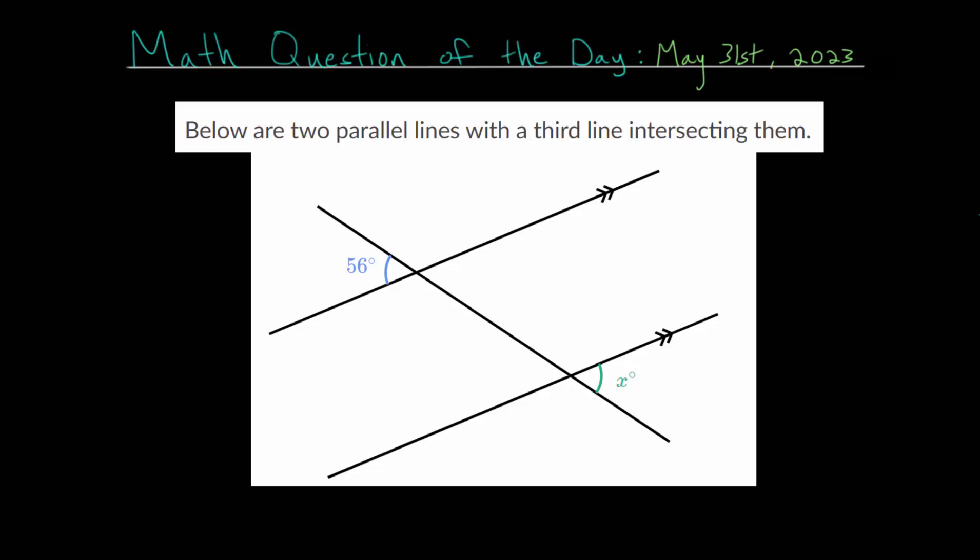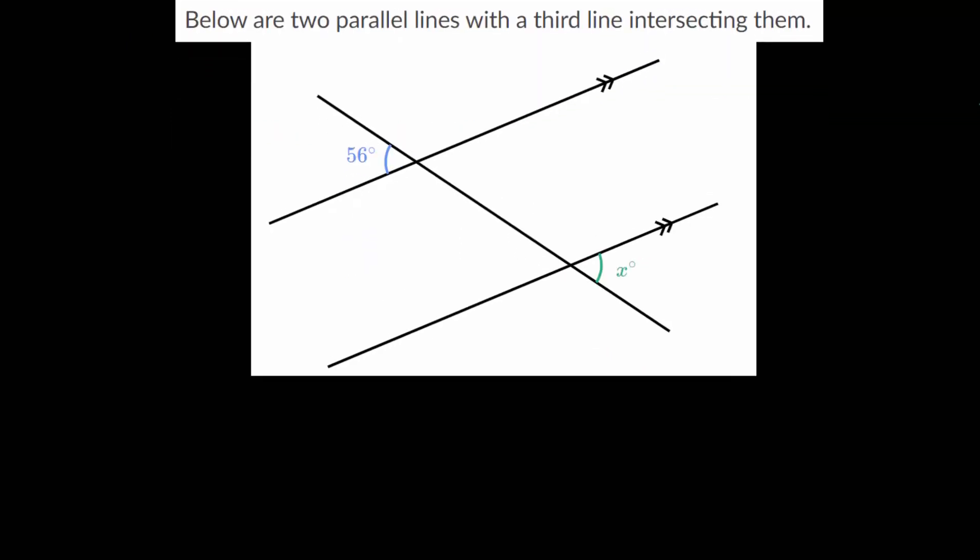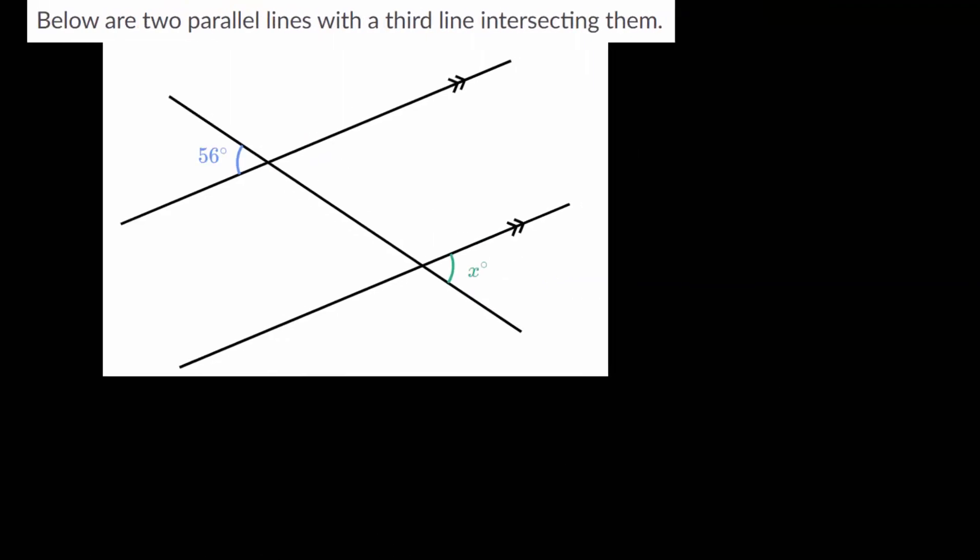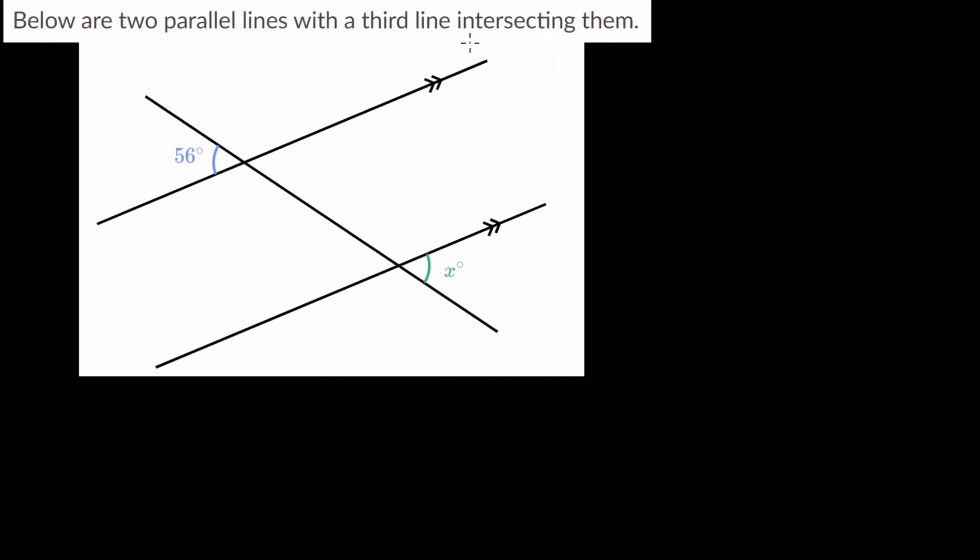Now, assuming that you have attempted the problem, let's start working through this. And since we're told that the two lines here and here are parallel, and they're cut by this third line, which we call the transversal, the line that cuts two parallel lines, we can figure out what this angle x is by using the properties of parallel lines.